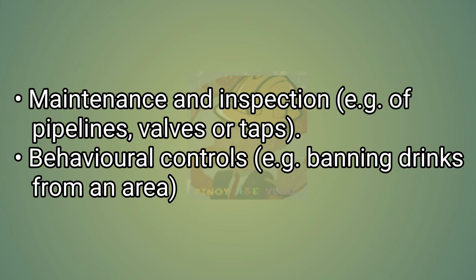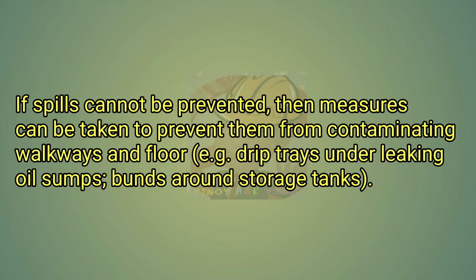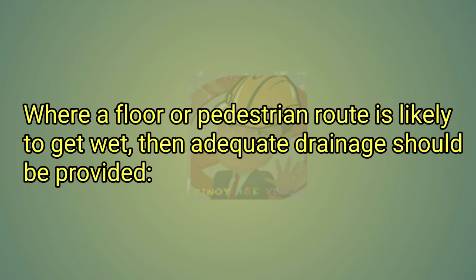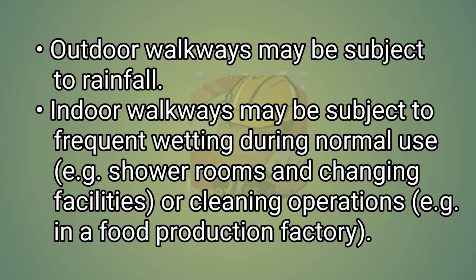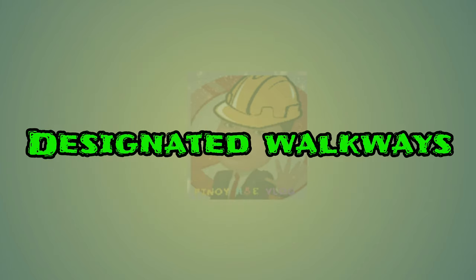Preventing spills might be done through maintenance and inspection, e.g. of pipelines, valves or taps, or behavioral controls, e.g. banning drinks from an area. If spills cannot be prevented, then measures can be taken to prevent them from contaminating walkways and floors, e.g. drip trays under leaking oil sumps, bunds around storage tanks. Where a floor or pedestrian route is likely to get wet, adequate drainage should be provided. Outdoor walkways may be subject to rainfall. Indoor walkways may be subject to frequent wetting, e.g. shower rooms and changing facilities, or cleaning operations in a food production factory.